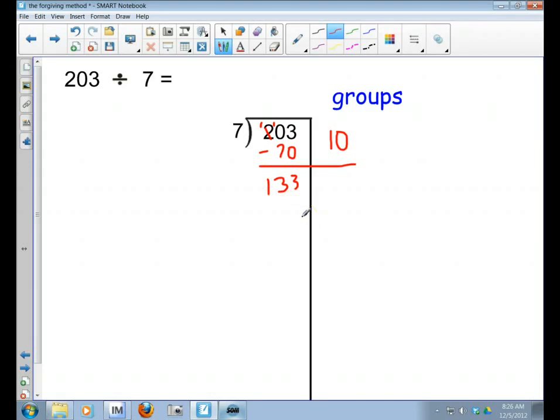Can I do another group of 10 if I'm putting 7 in each? Yes I can, because 70 is less than 133. So here's my 70 balls that I just got in 10 more containers. Now I'm going to subtract. 3 take away 0 is 3, and I've got 3 take away 7, can't do it. Borrow from this hundreds place, so now I've got 13 take away 7 equals 6. So now I've got 63.